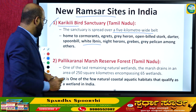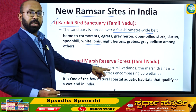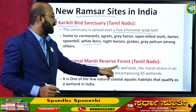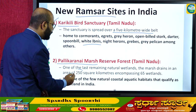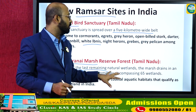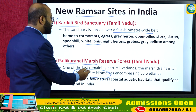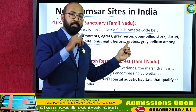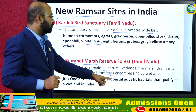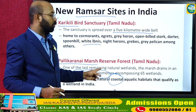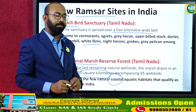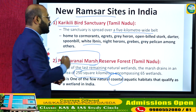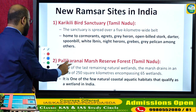The second newly added site is the Pallikaranai Marsh Reserve Forest in Tamil Nadu. It is one of the last remaining natural wetlands, with the marsh draining an area of 250 square kilometers encompassing 65 smaller wetlands. It is one of the few remaining natural coastal aquatic habitats in India.